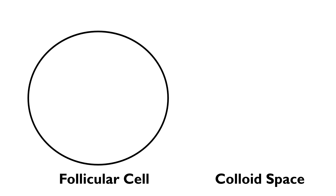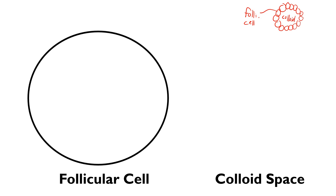The thyroid gland is made up of follicular cells that are arranged in almost a big circle. Each one of these is a follicular cell, and it forms this area in the middle — the colloid space. The colloid space is a very viscous type liquid space, and a lot of the steps of T3 and T4 production happen in the colloid space, and some steps happen in the follicular space.